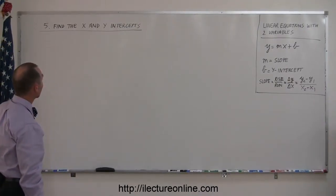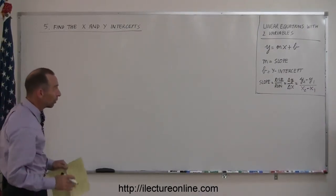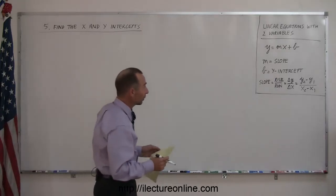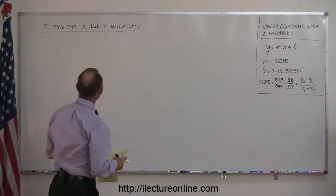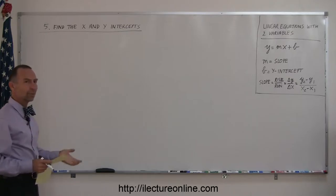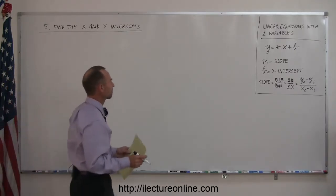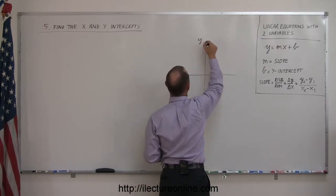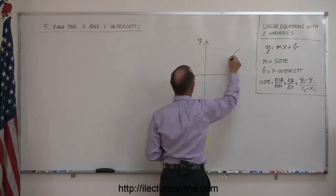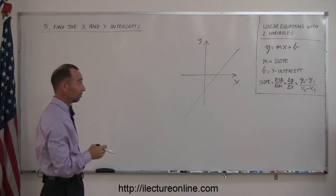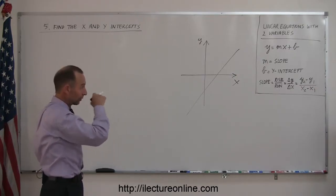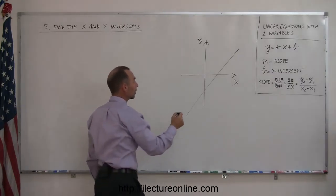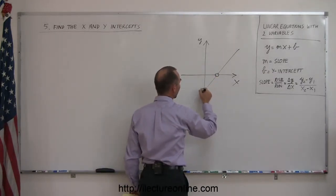Another type of question you may run into when dealing with linear equations in two variables is finding the x and y intercepts. Let's say we have a linear equation and we graph it. Any line representing a linear equation that is not parallel to the x-axis or parallel to the y-axis — meaning straight up and down or horizontal — will at some point cross the x-axis and at some point cross the y-axis.